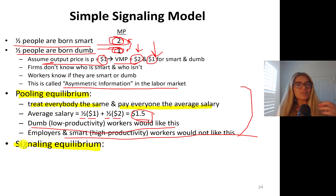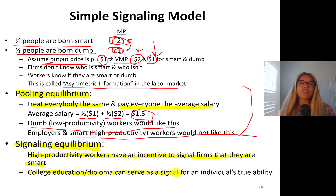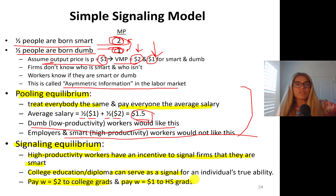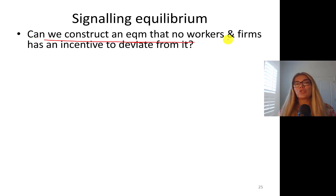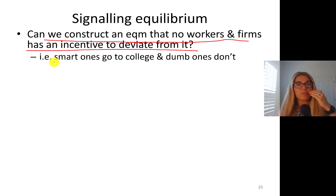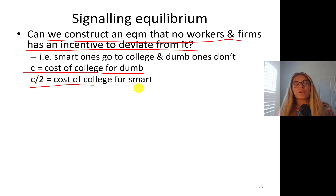The signaling equilibrium uses college education as a signal. High-productivity workers have an incentive to signal firms that they're smart. College education or any diploma can serve as a signal for an individual's true ability. So firms will pay $2 to college graduates and pay $1 to high school graduates. We don't care if you're smart or dumb — we pay you more based on your education. Can we construct an equilibrium where no worker or firm has an incentive to deviate? We want smart people to go to college and not-so-smart ones to not go, so workers are sorted into jobs accordingly. Assume that C is the cost of a college degree for not-so-smart workers, and C over 2 is the cost of college for smart people — cost of going to college is lower for smart people.